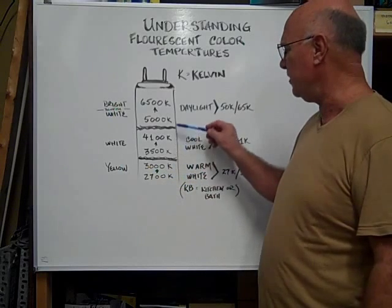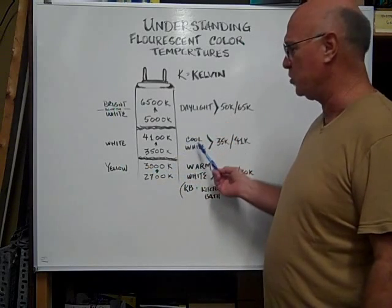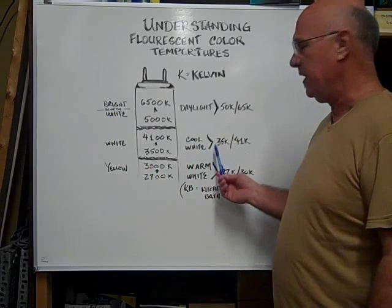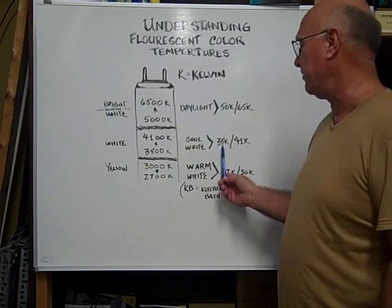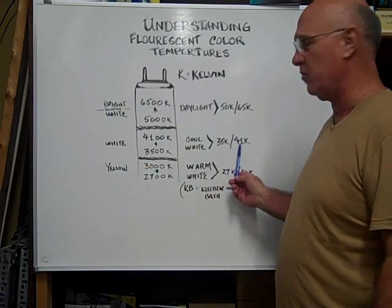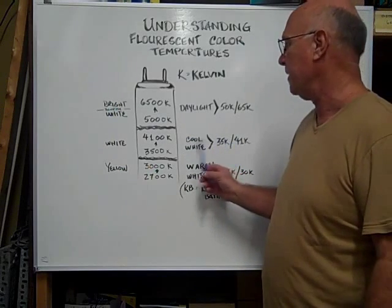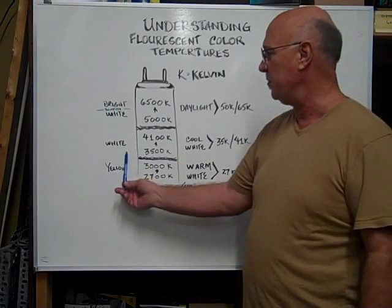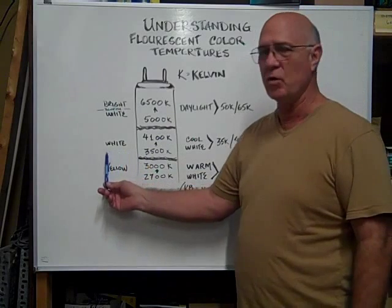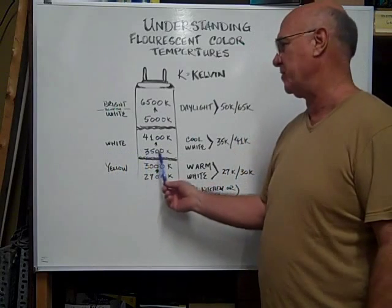The center of the spectrum is cool white, indicated by 35K or 41K commonly. And that's going to be more in the white spectrum.